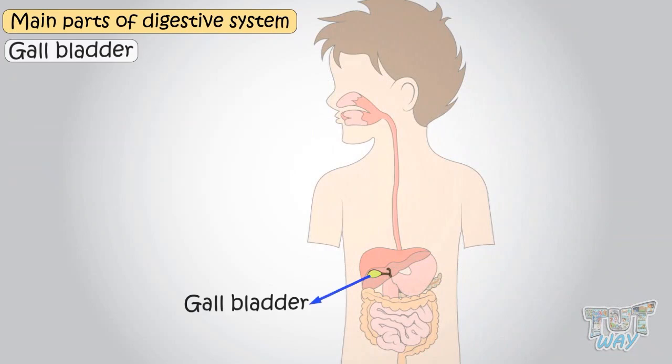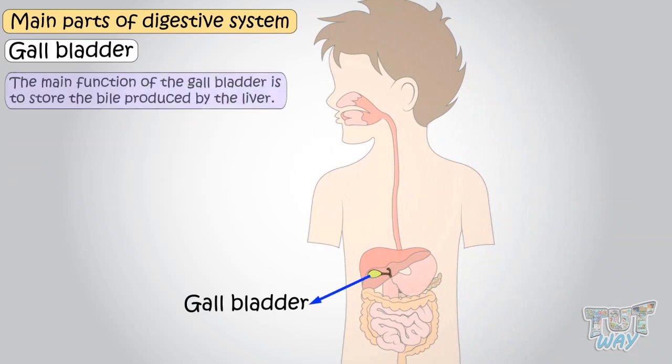Gallbladder — the main function of the gallbladder is to store the bile produced by the liver.